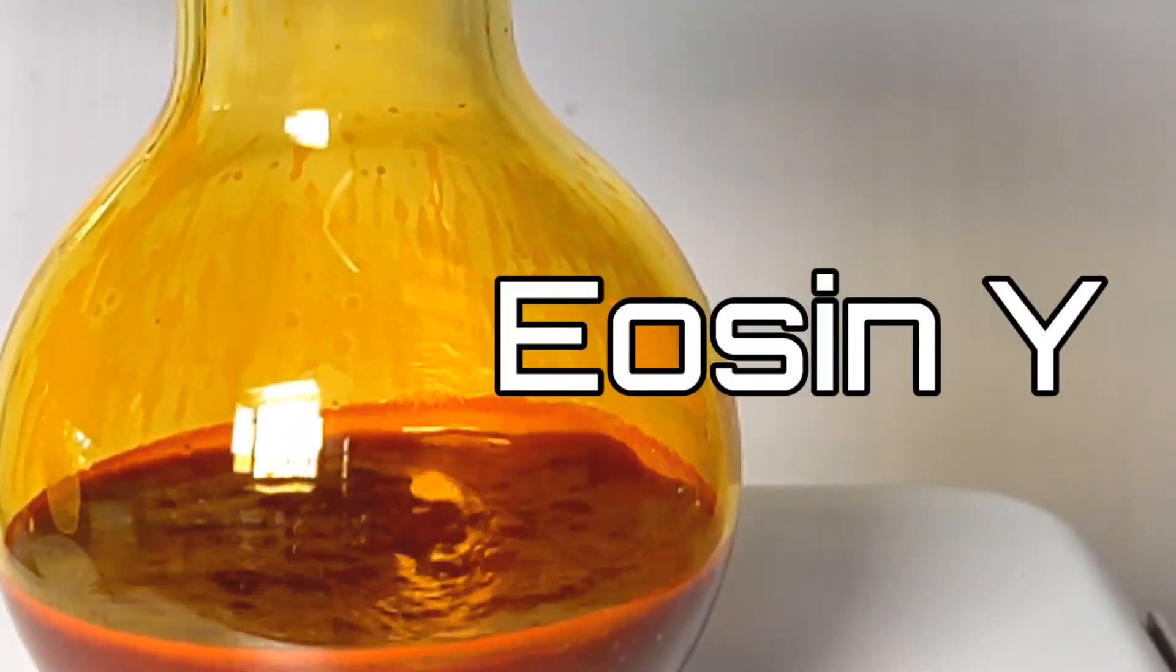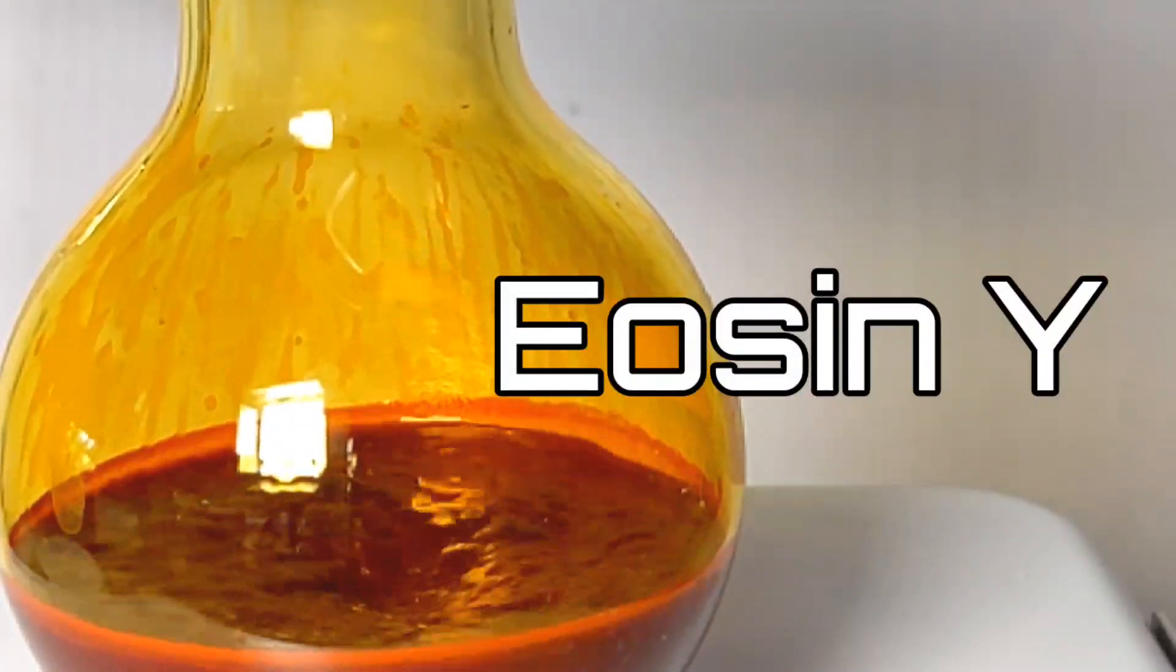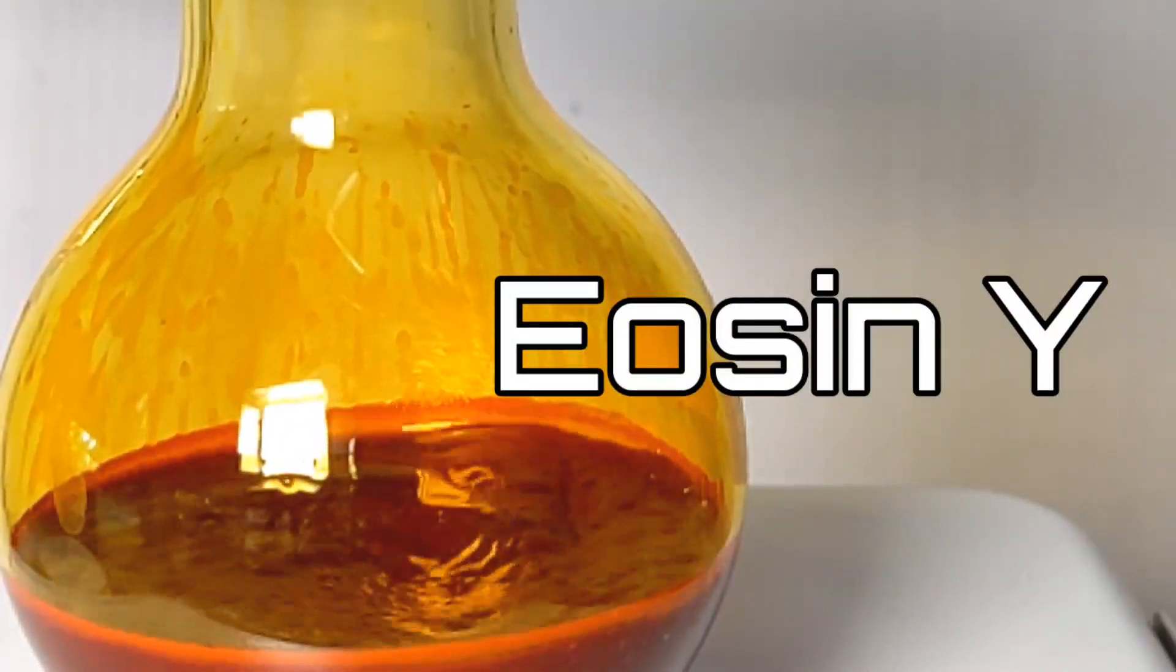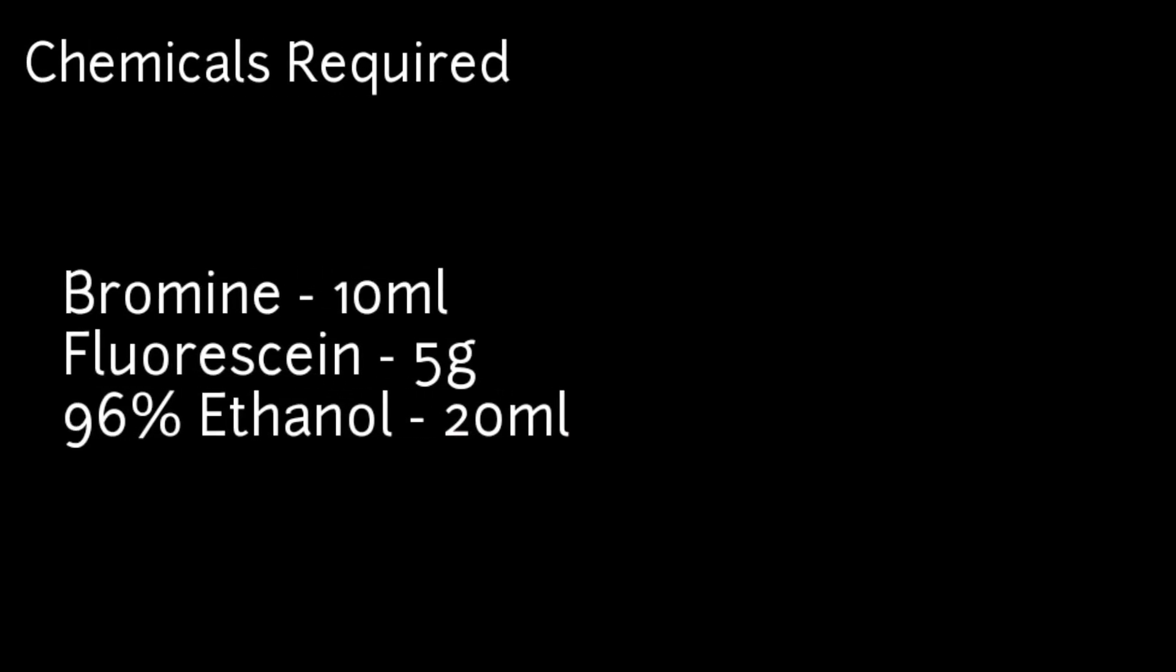Hello friends, in this video we will synthesize eosin Y or tetrabromofluorescein by the direct bromination of fluorescein. For this experiment you will need 5 grams of fluorescein, 10 milliliters of bromine, and 20 milliliters of 96% ethanol.